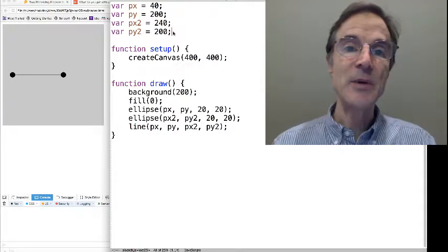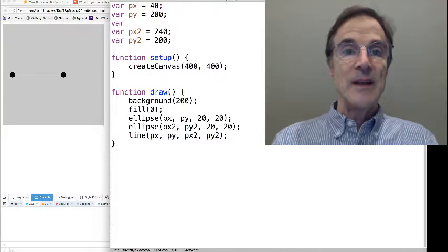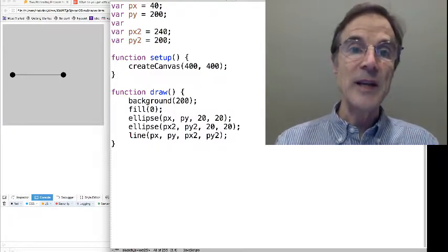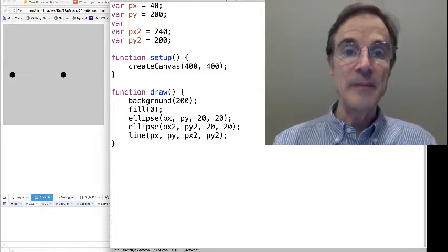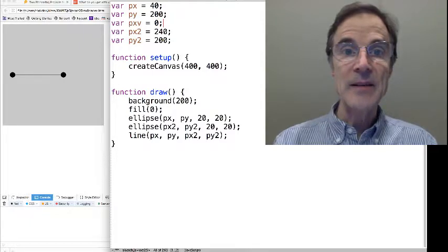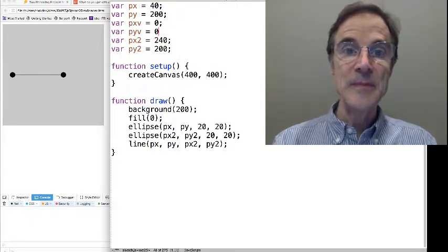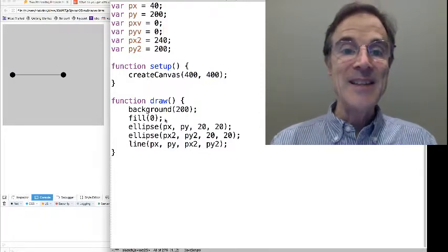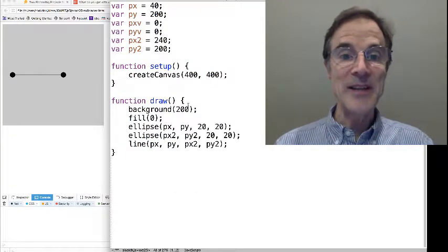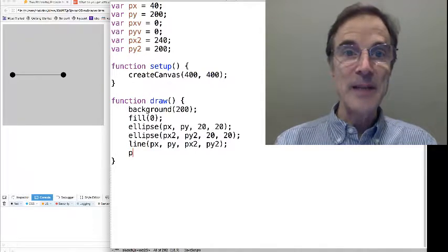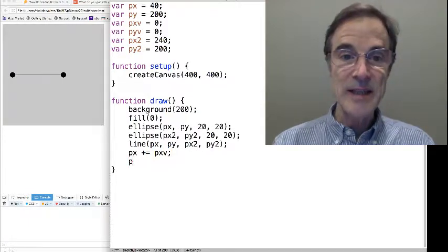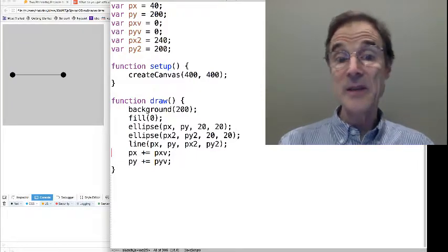Let's add some motion. We are going to allow the particle on the left, that's pxpy, to move, and I'm going to keep the other particle fixed. So to move that particle, we're going to make a velocity. And let's say the velocity is initially zero. So px velocity, py velocity. P is for particle, by the way. And that's all we need to do, except when we run it nothing happens. Because we need to update px plus equals px velocity. Py moves according to the py velocity. And this is still not going to do anything because the velocity is zero.